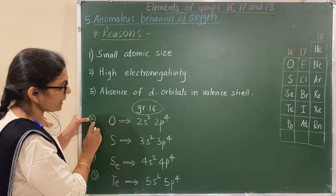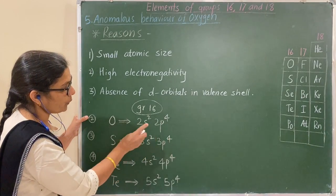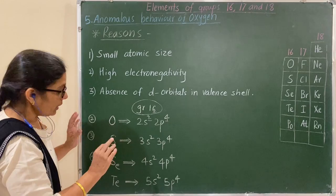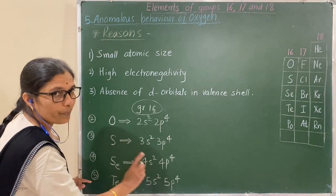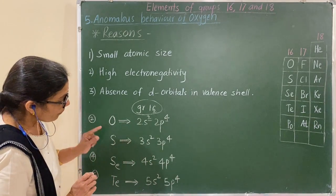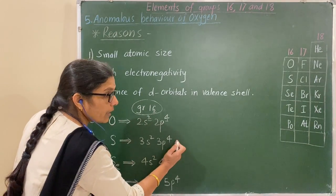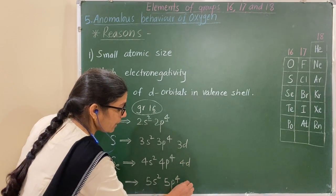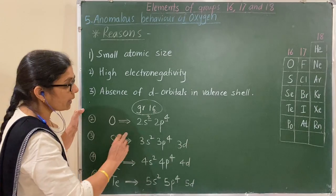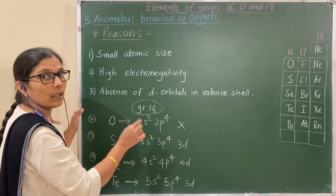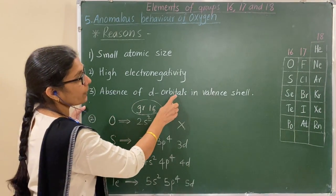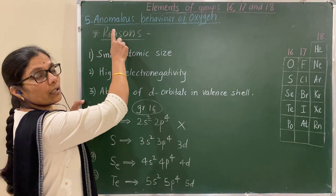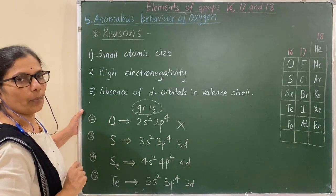Oxygen is from the second period; its valence shell electronic configuration is 2s² 2p⁴ — group 16 has six electrons in the valence shell. For the other members, the configuration is 3s² 3p⁴ and so on. In these heavier elements, d orbitals are present in the outer shell — 3d, 4d, 5d — but oxygen has no d orbital in its valence shell. This absence of d orbital in the valence shell of oxygen is the third reason for its anomalous behavior.